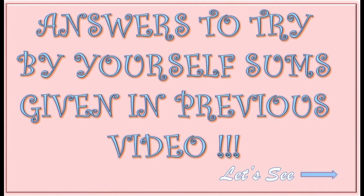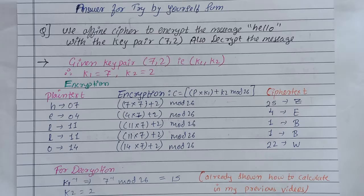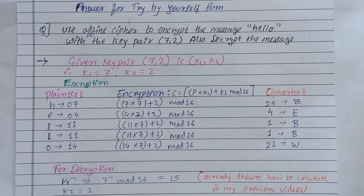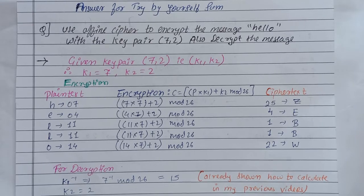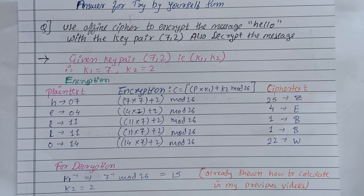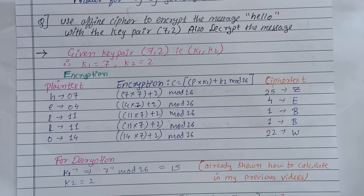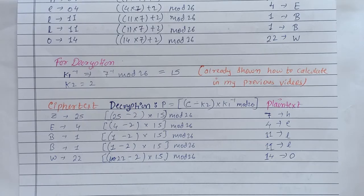Firstly we will see answers to the try-by-yourself sums that I gave in my previous video. Using affine cipher we encrypted and decrypted the message and thus we retrieved our plain text.